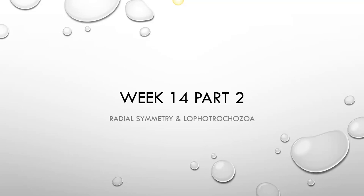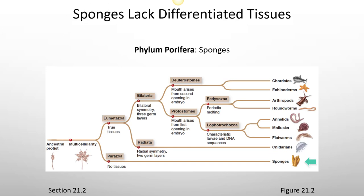This next section will talk about radial symmetry and Lophotrochozoa, starting with the phylum Porifera — the sponges.